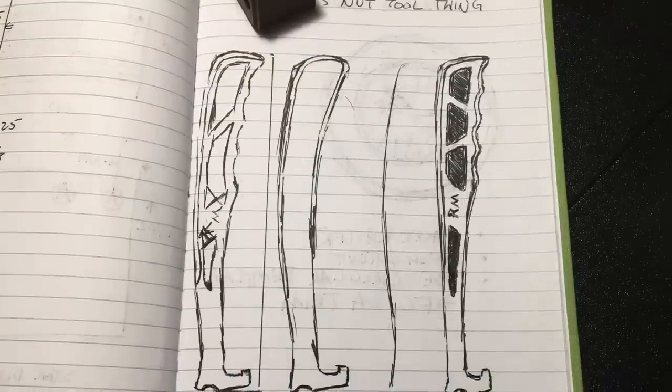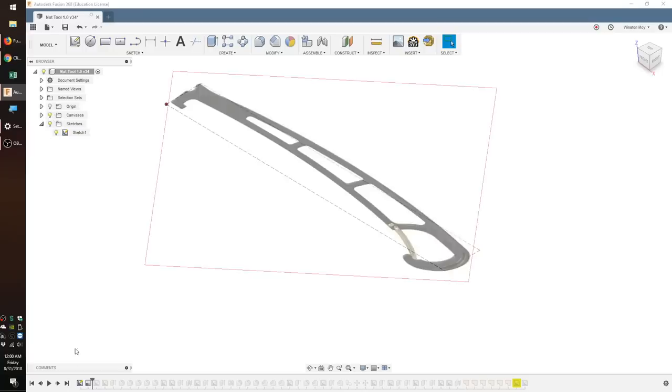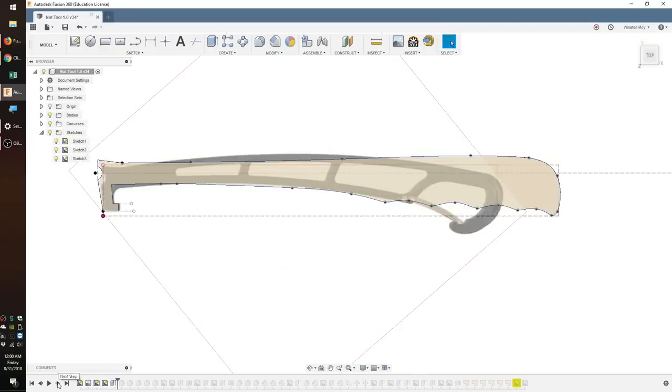After iterating on some designs in my notebook, I went to Fusion to model this thing out. For the business end of my nut tool, I primarily used straight line segments to define the hook and its transition into the handle. Once I was past the neck, I switched to splines to create a more organic shape and some finger conforming contours. I extruded this profile out to a thickness of 0.1 inches.